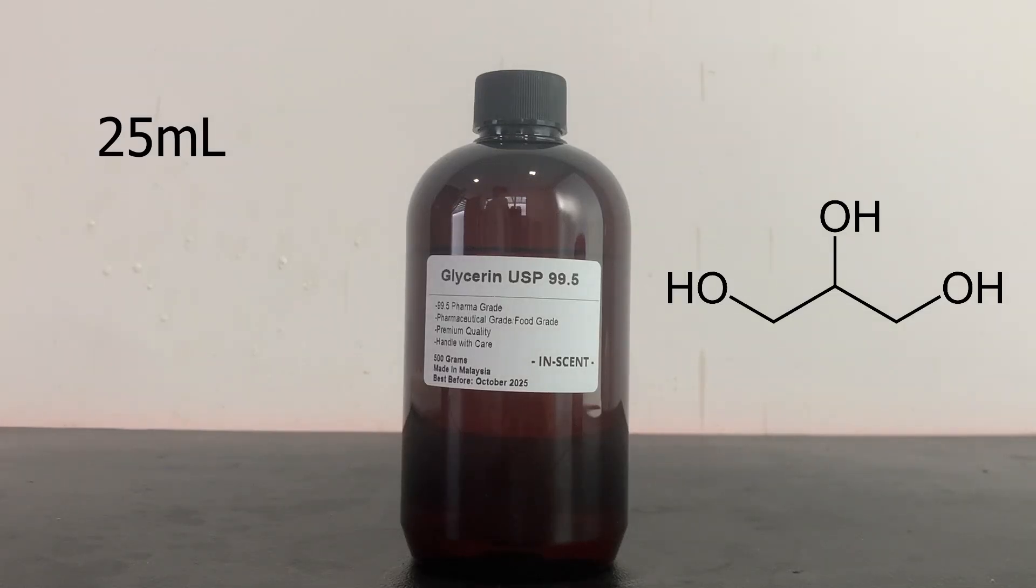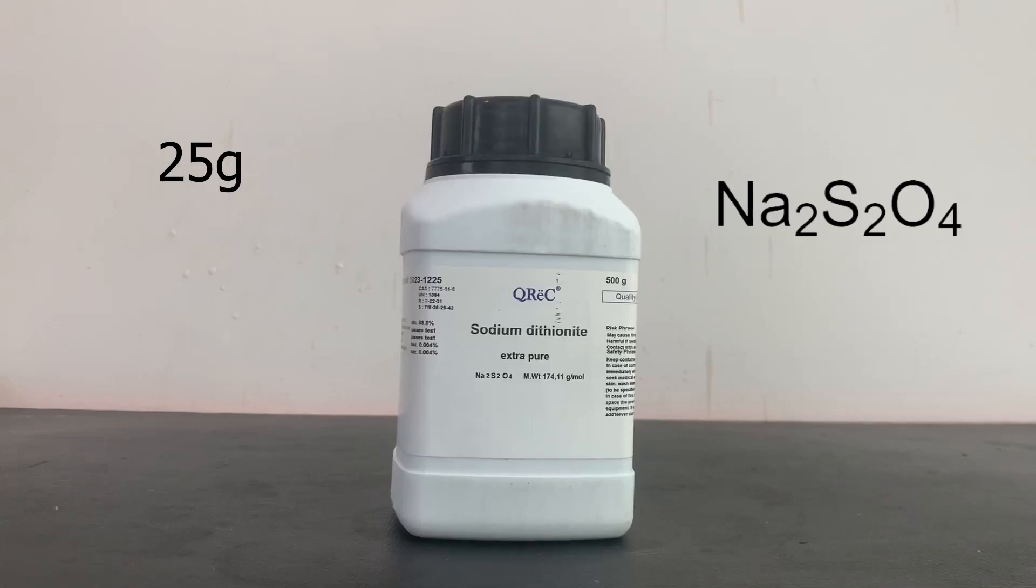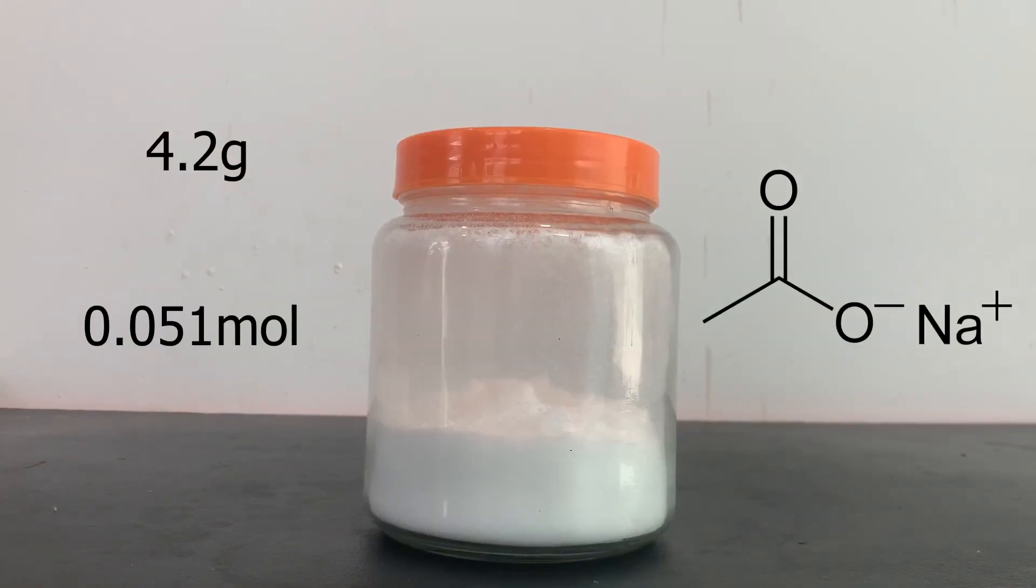We will also need 25 milliliters of glycerin, which can be bought from pharmacies, 5 grams of sodium hydroxide, which can be bought as a drain cleaner in hardware stores, 25 grams of sodium dithionite, and finally 4.2 grams of sodium acetate.